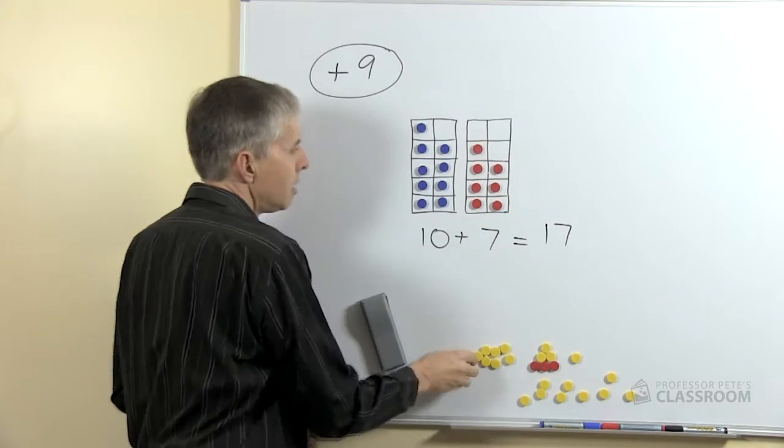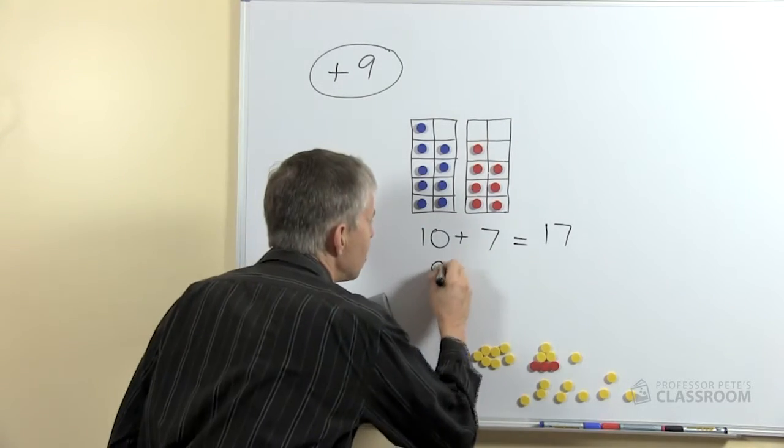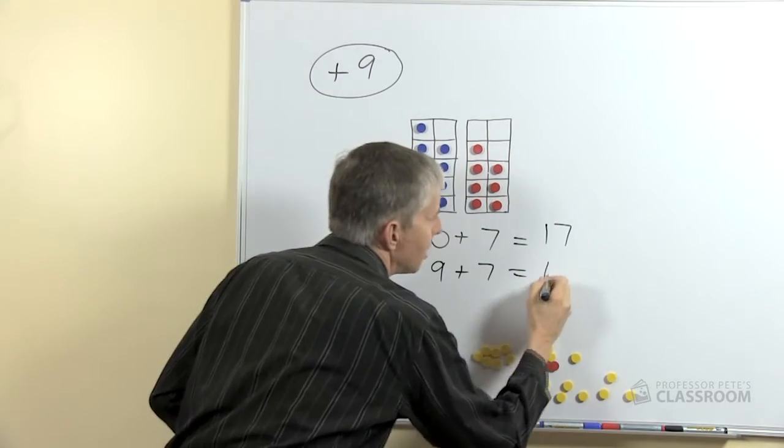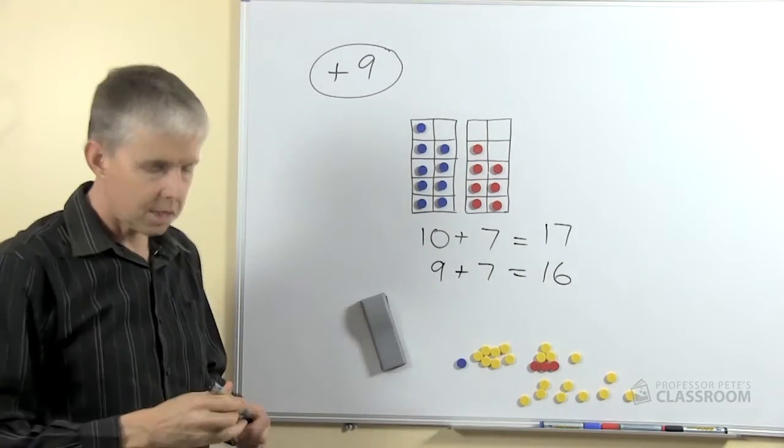What would it be if we added 9 plus 7? If we take one of the counters away, clearly we've got one less than we had before, and that is 16.